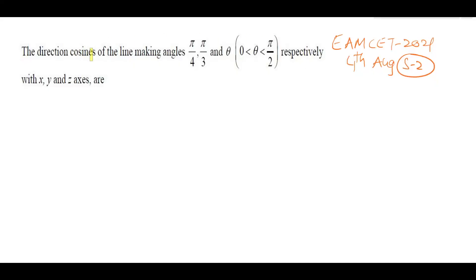This chapter is on Direction Cosines and Ratios, which carries one mark weight in MSet. This video is useful for AP and Telangana students. This is an MSet 2021, 4th August, Shift 1 question. Find the direction cosines of the line making π/4, π/3, and θ with the x, y, z axes respectively.